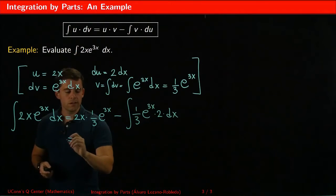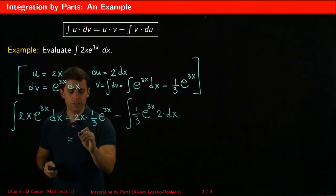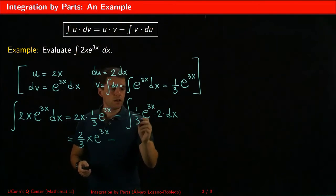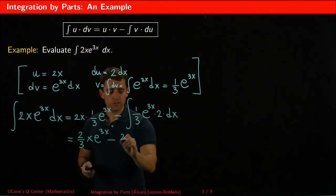I can simplify this already a little bit. This is 2 thirds of x e to the 3x minus, I can take a 2 thirds out of this integral.